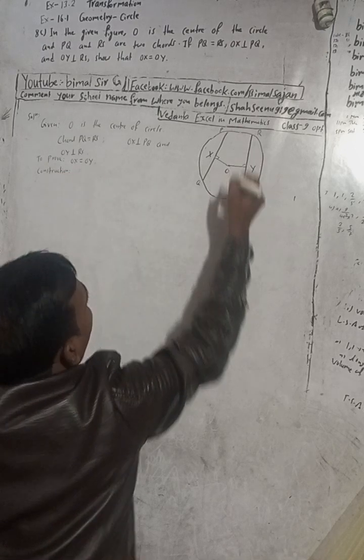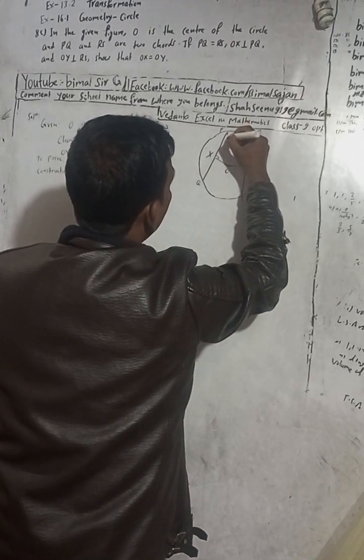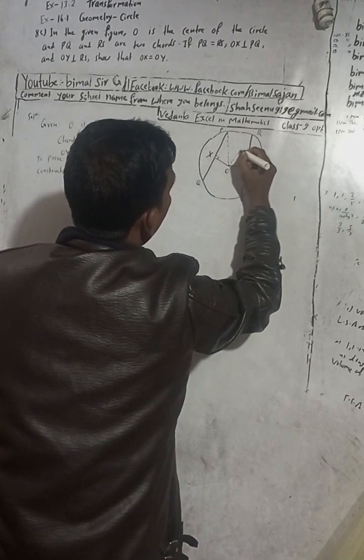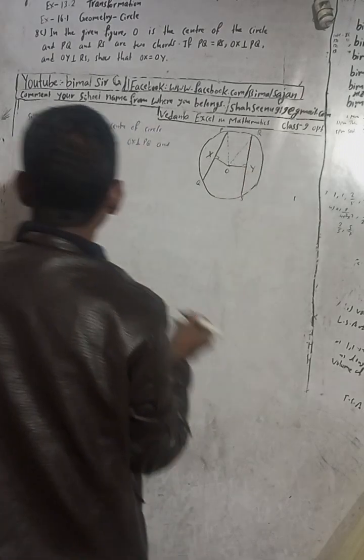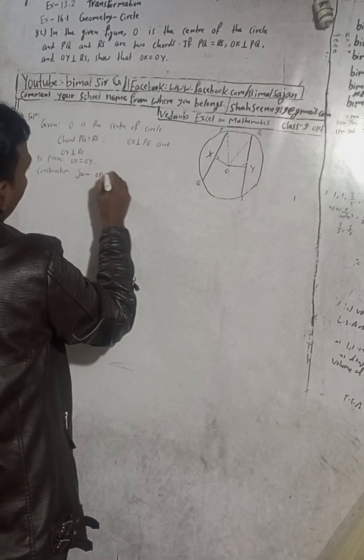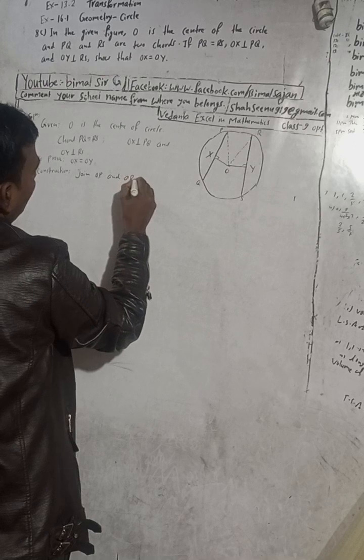Construction: join OP and OR. When you join OP and OR, they are the radii — OP and OR are the radii of the circle.